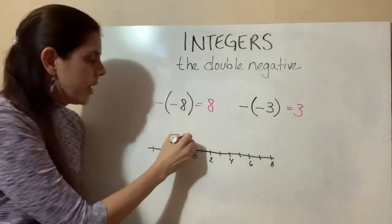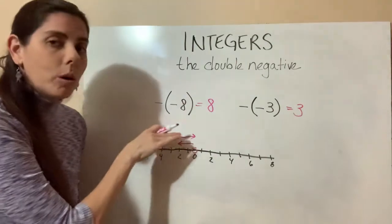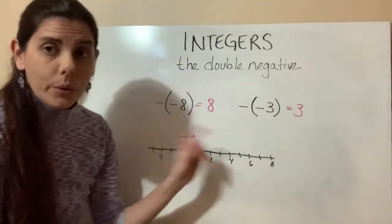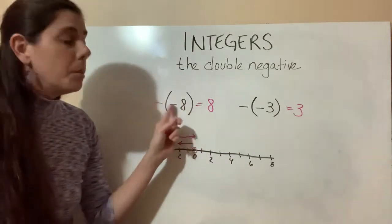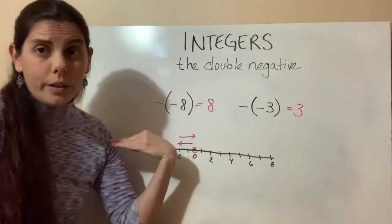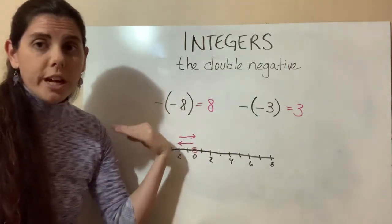There's only two ways you can go on this number line. You can go to the right or to the left. So the double negative says okay, we're changing from natural direction to go to the negative, and then the second sign says nope, nope, we're changing again and we're going back.